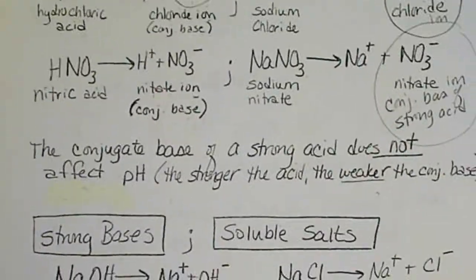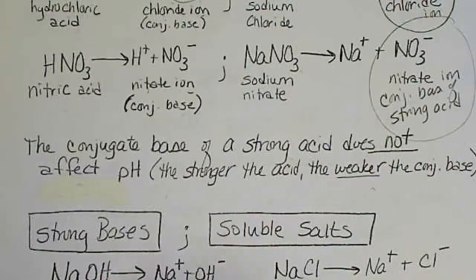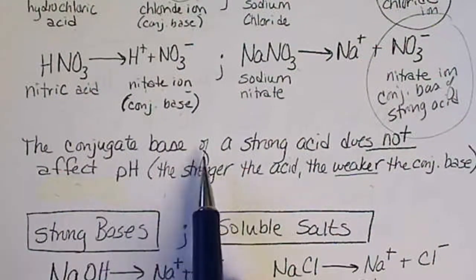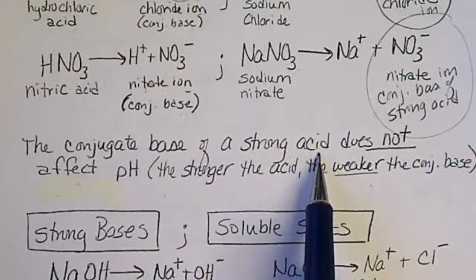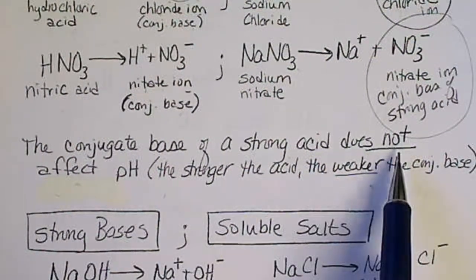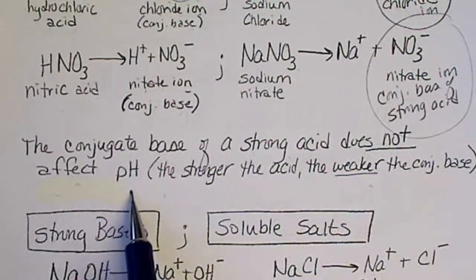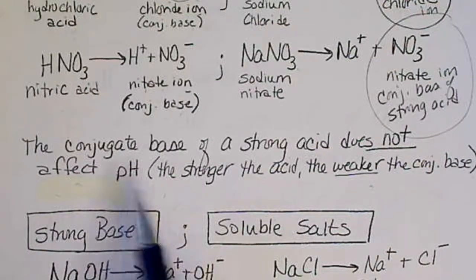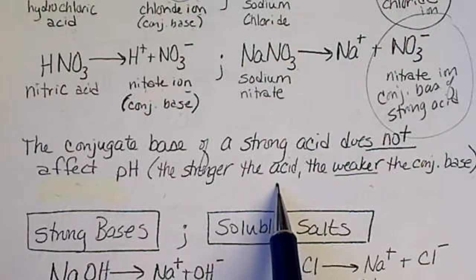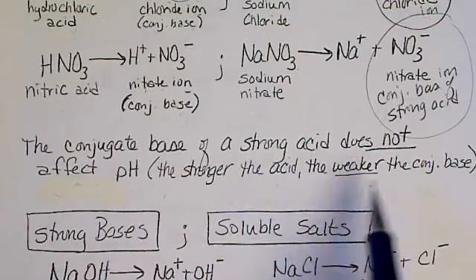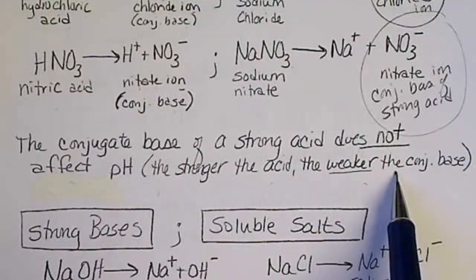The conjugate base of a strong acid does not affect the pH. That's because the stronger the acid, the weaker the conjugate base.